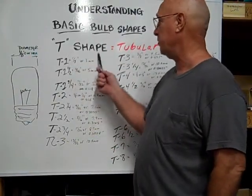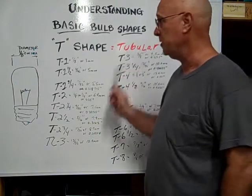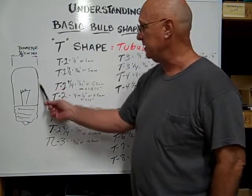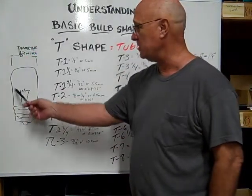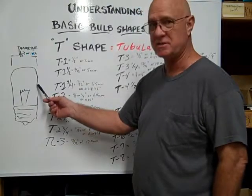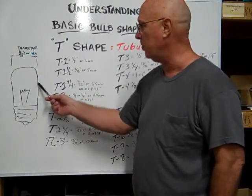Today we're talking about T-shaped bulbs, or tubular bulbs. And that is the dimension across the diameter of the glass envelope, the globe of the bulb.